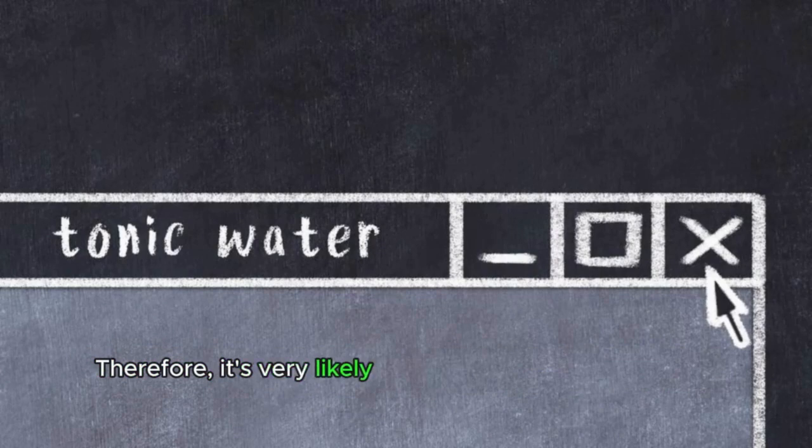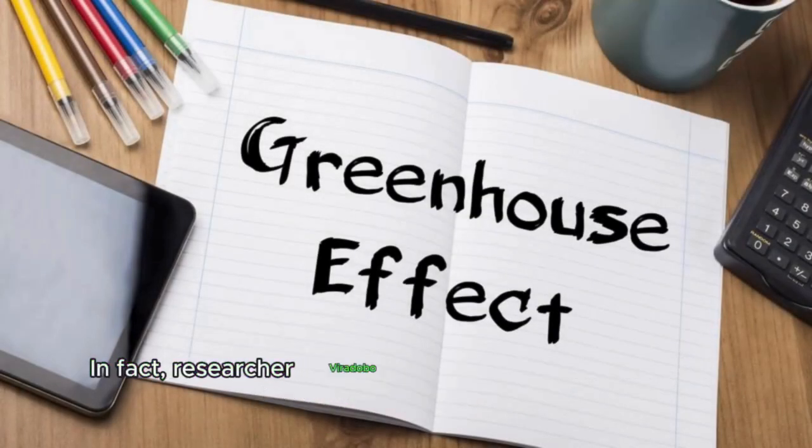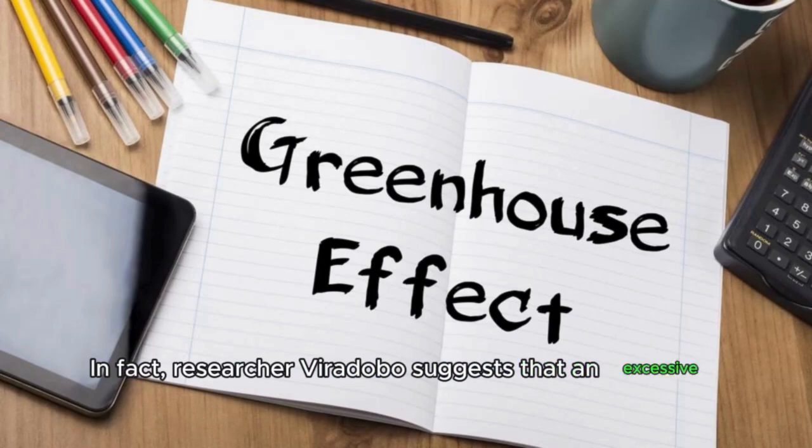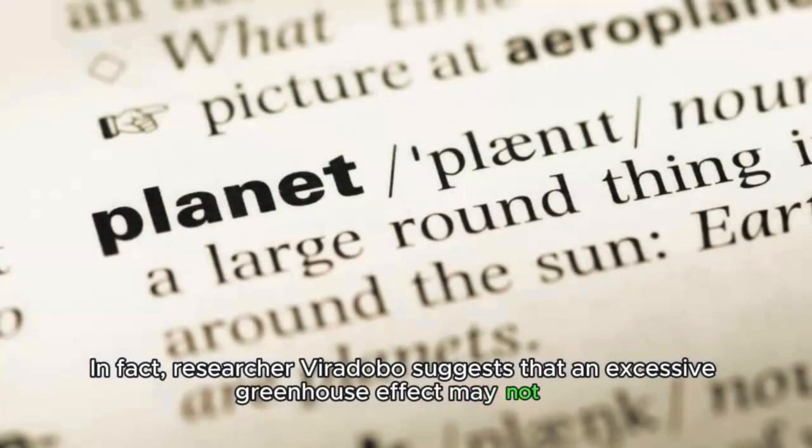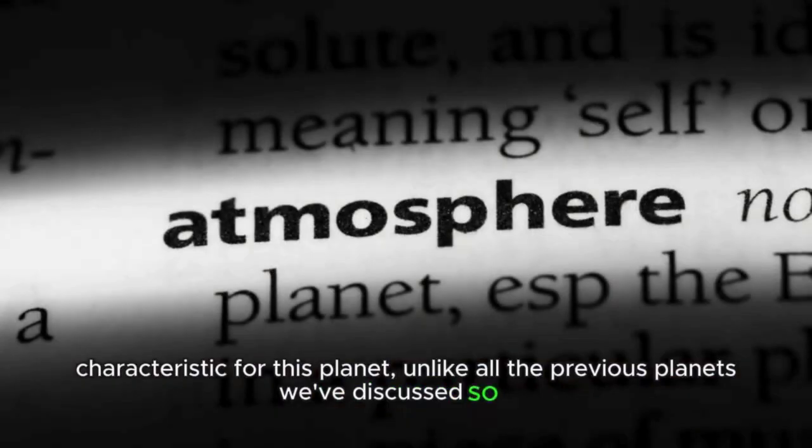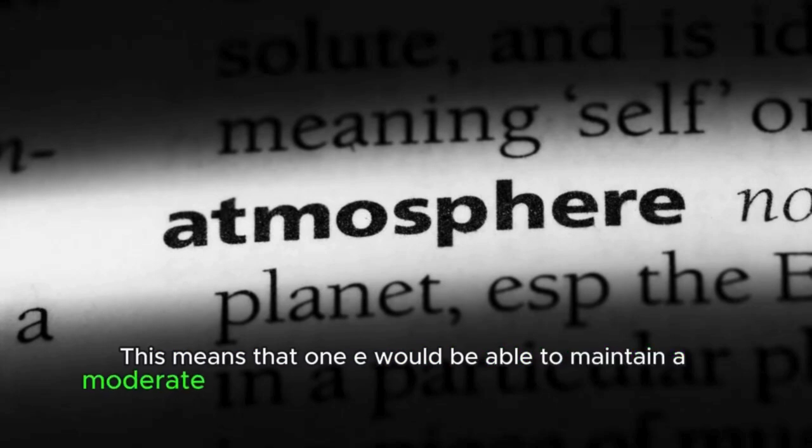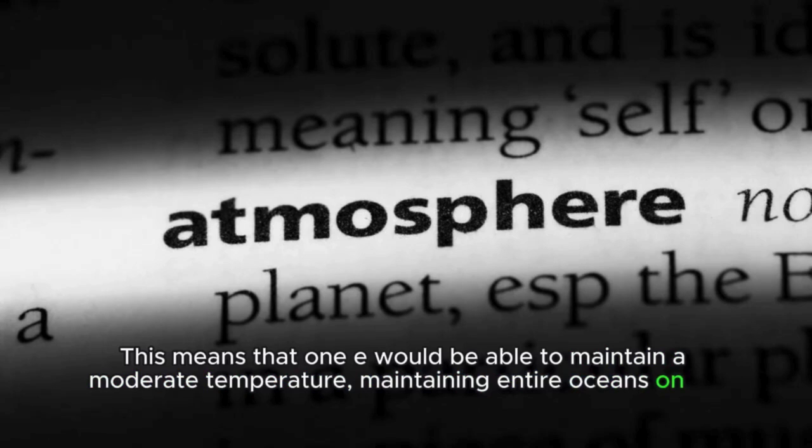Therefore, it's very likely that 1e may contain water, and in quite large quantities. In fact, researcher Vira Dobos suggests that an excessive greenhouse effect may not be characteristic for this planet, unlike all the previous planets we've discussed so far. This means that 1e would be able to maintain a moderate temperature, maintaining entire oceans on its surface.